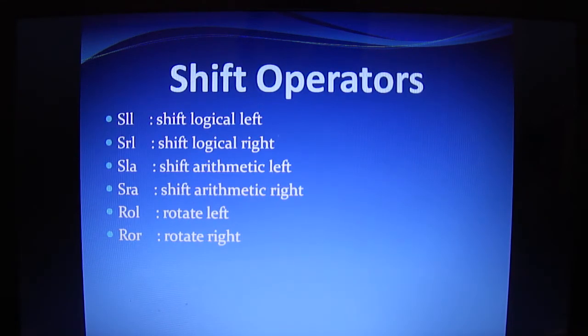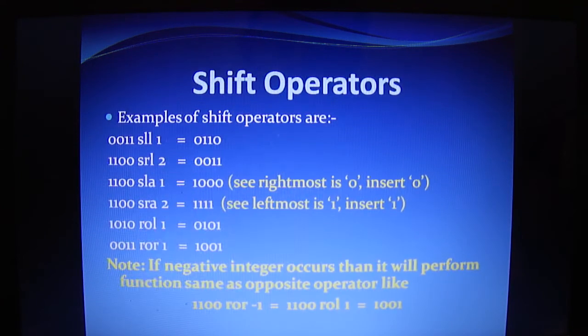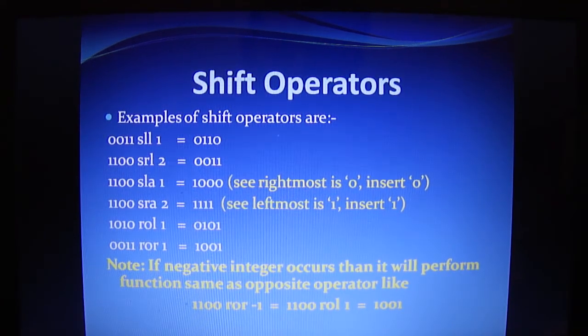Next is the shift operators. Shift operators consist of SLL represents shift logical left, SRL means shift logical right, SLA means shift arithmetic left, SRA means shift arithmetic right, ROL represents rotate left and ROR is for rotate right. Now let's go to the example of this shift operators.